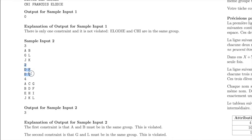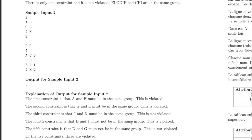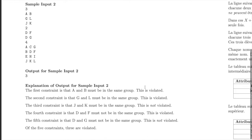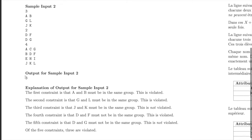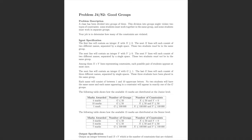Looking at the must-be-separated constraints: D and F are not separated, so that's violated. The final constraint is that D and G must be separated — they are separated, so that's not violated. That's two violations plus one, giving three total violations. The output is three.